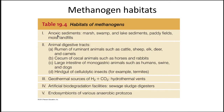Methanogens are found all over the world and in all sorts of habitats. You can find them in anoxygenic sediments, in animal digestive tracts, in geothermal sources like hydrothermal vents, in sewage sludge digesters, artificial biodegradation facilities, and they are endosymbionts of a number of anaerobic protozoa.